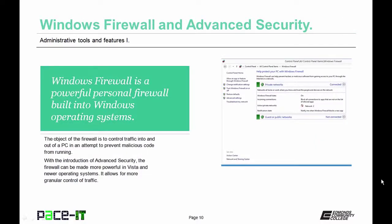Windows Firewall is a powerful personal firewall built into all Windows operating systems from Windows XP and newer. Its purpose is to control traffic into and out of a PC in an attempt to prevent malicious code from running. From Windows Vista onward, there was Windows Firewall with Advanced Security, which made the firewall more powerful and allowed for more granular control.